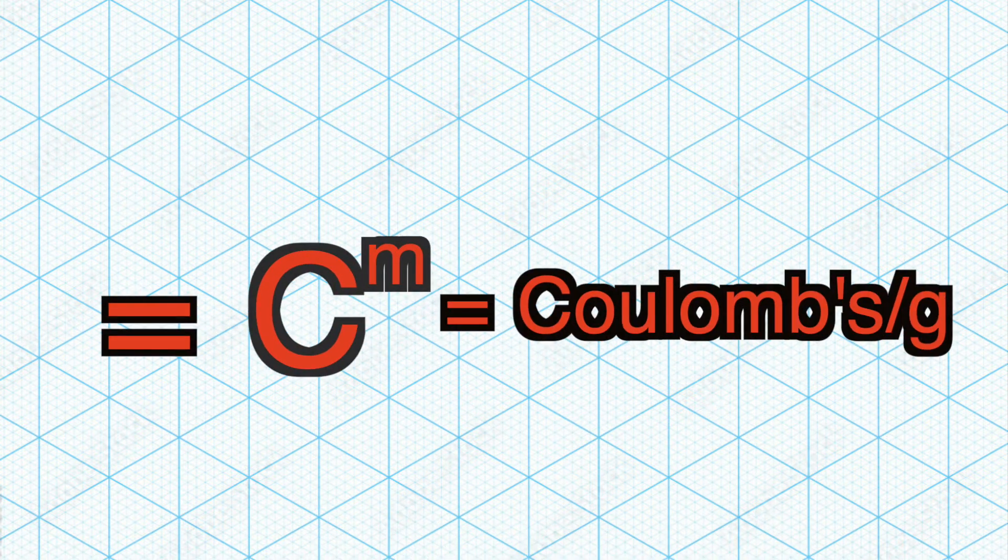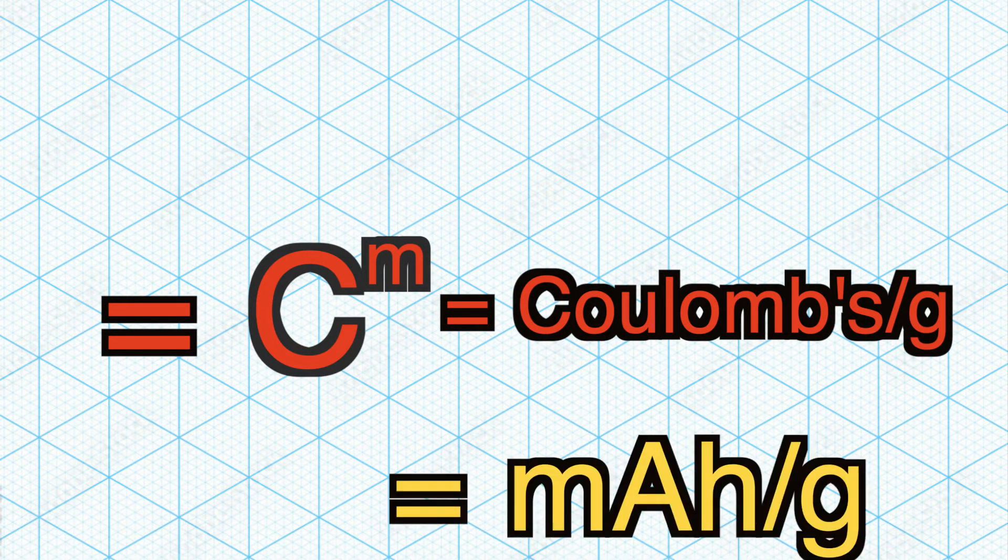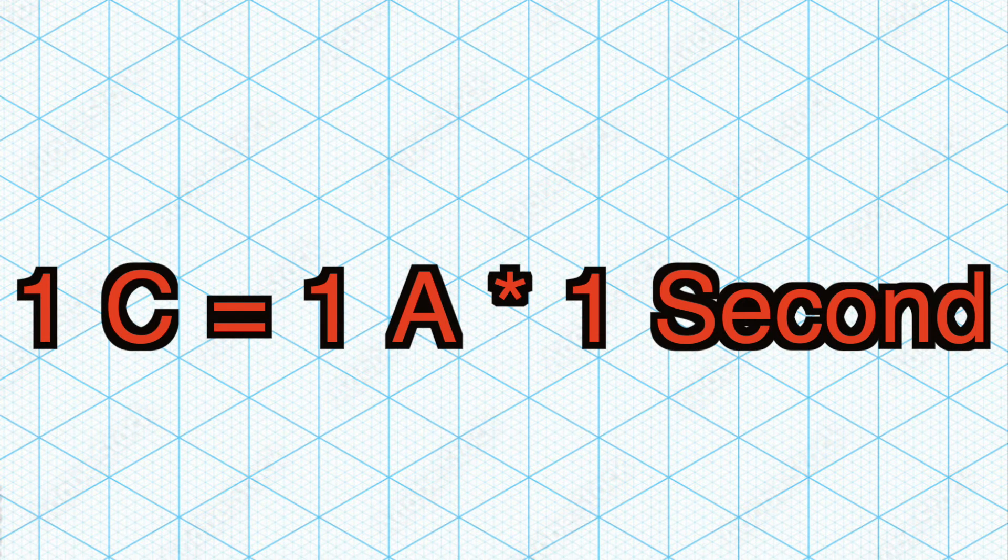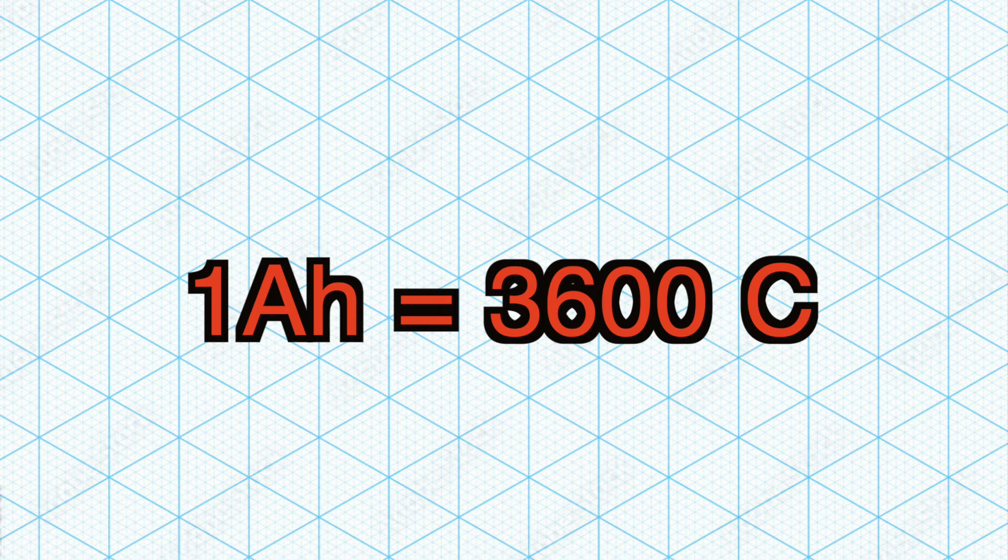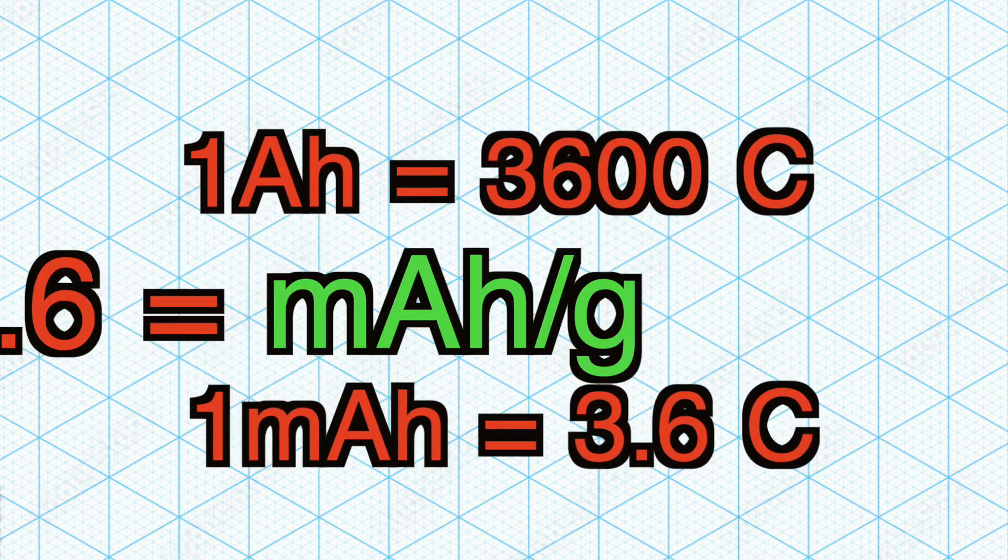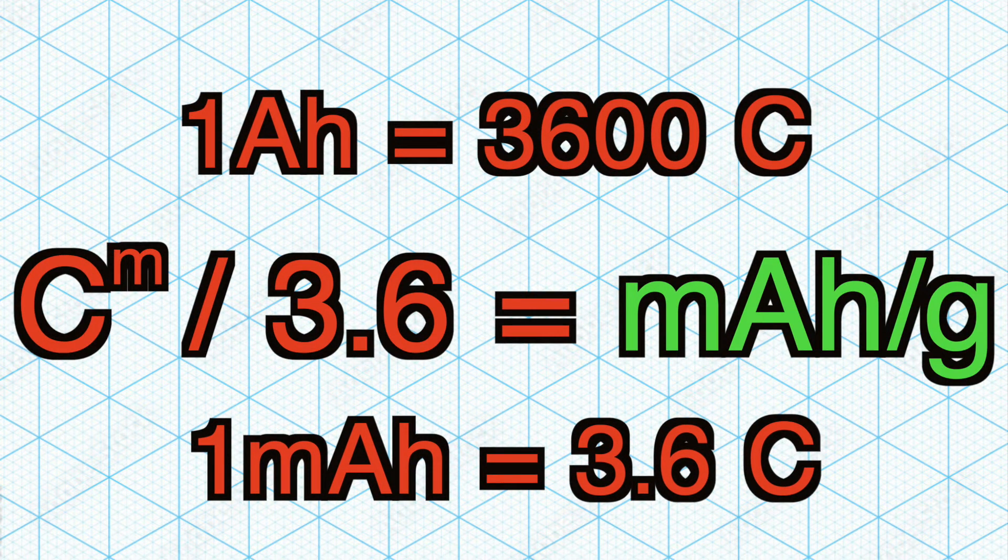However, it gives it to us in coulombs per gram. What we want is milliamp hours per gram. So given that one coulomb is equal to one amp times one second, this means that one amp hour is equal to 3,600 coulombs. This also means that one milliamp hour is equal to 3.6 coulombs.